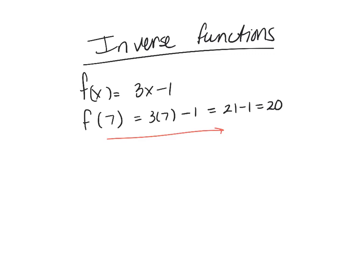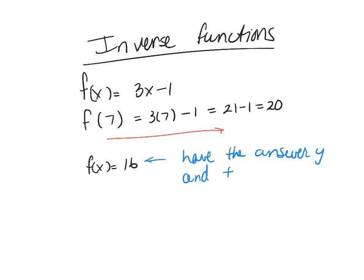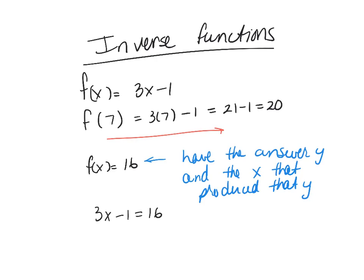What happens if I tell you that f of x is equal to 16? If I say f of x is equal to 16, then what this is saying is I have y, and I want the x that produced that. It's like, okay, I have the answer — what produced that x? What I could do is set 3x minus 1 equal to 16 and solve, and that's going to give me the x that produced that.